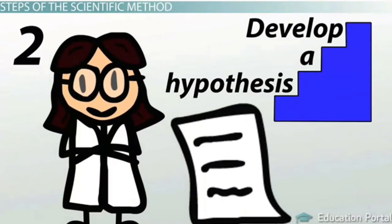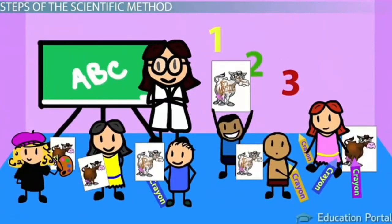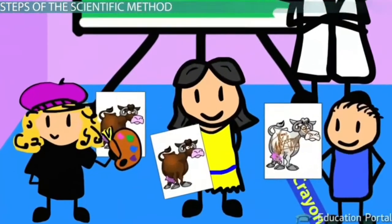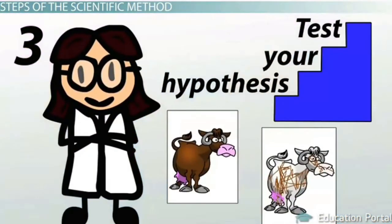Second, you will develop a hypothesis about what you want to investigate. A hypothesis is a testable statement that is logically derived from theory or observation. Previous research is essential to helping you form this educated guess. In our example, the researcher guessed that three-year-old girls have better fine motor skills than three-year-old boys, based on her observation and research. Third, you will test your hypothesis.